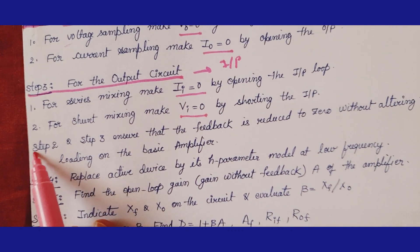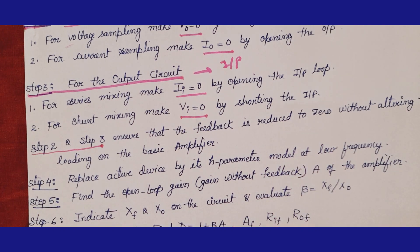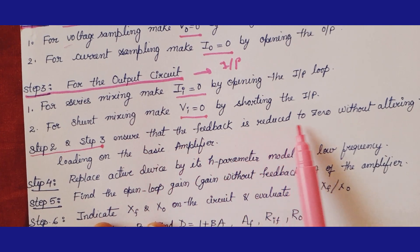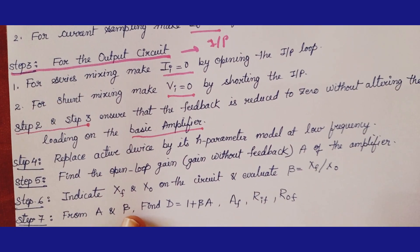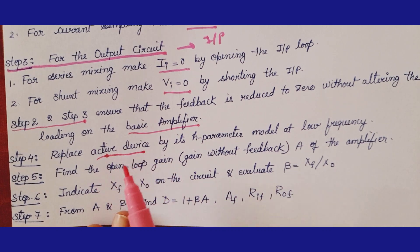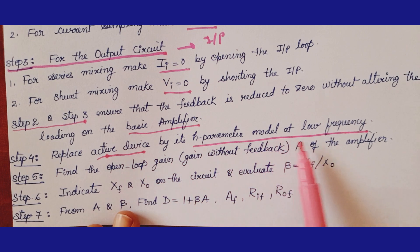After performing steps 2 and 3, feedback is reduced to 0 without altering the loading on the basic amplifier, giving you a circuit without feedback. Now you need to replace the active device. If a BJT is used, replace it with the H-parameter model at low frequency.